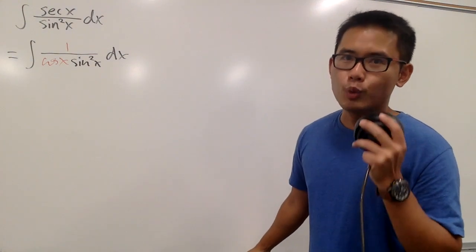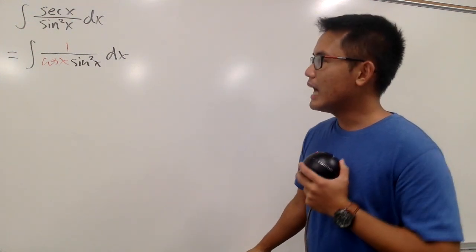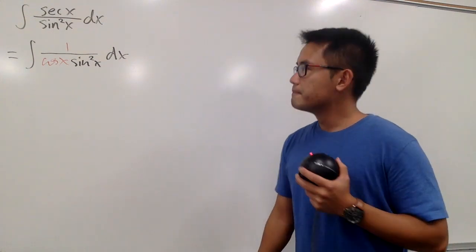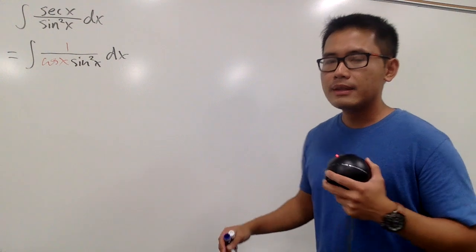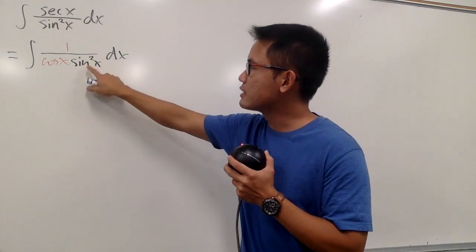Remember, sometimes when we have more, it's actually better for integration, right? We have sine squared x and cosine x. That's nice. And we have a 1 on the top. How can we come with more things? Especially we have the sine squared x already.